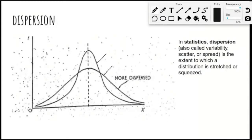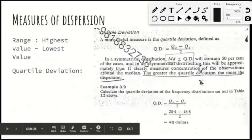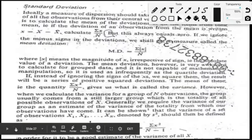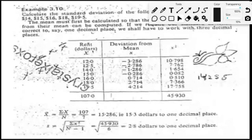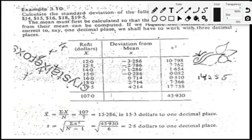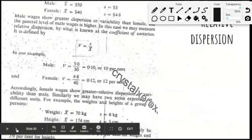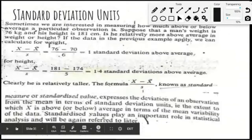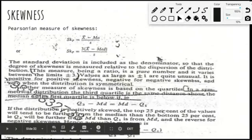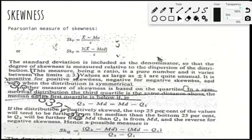So we talked about range, we talked about quartile deviation, we talked about standard deviation, we talked about variance. And we also looked at one example of how we can calculate variance if a data set is given, and how we can calculate standard deviation. Today we are going to talk about a few more concepts related to dispersion, and then if time permits, we will talk about the last topic which is skewness for this unit.